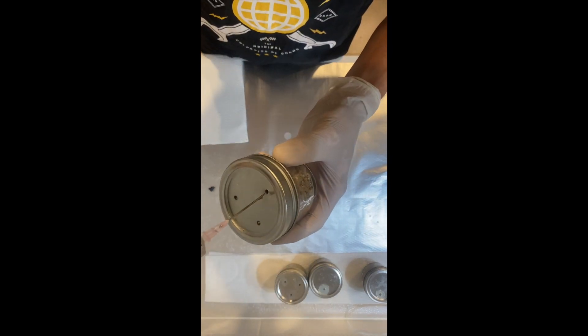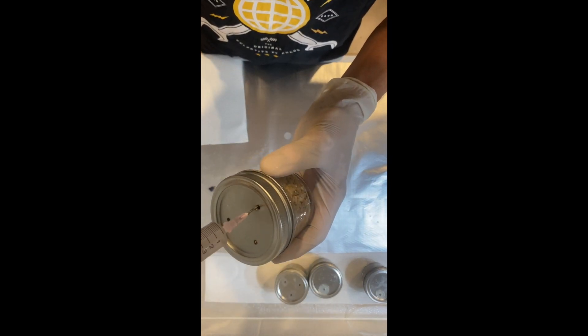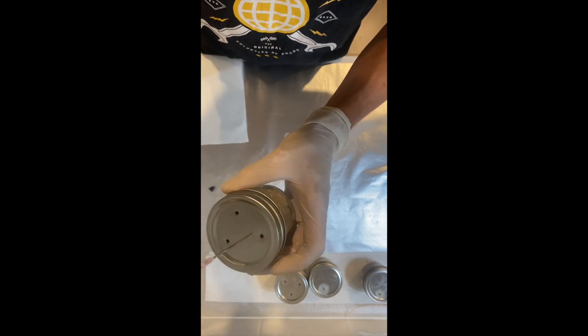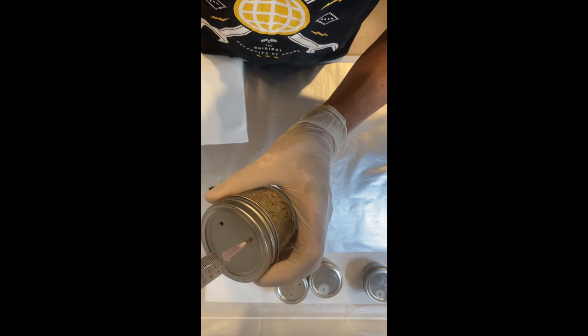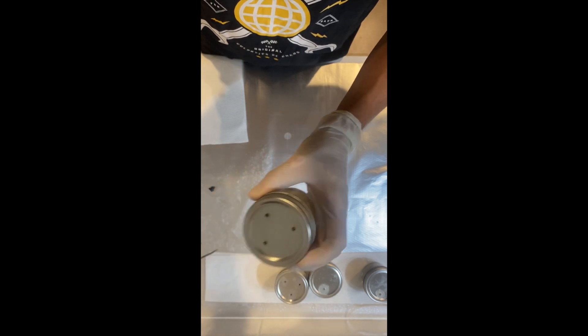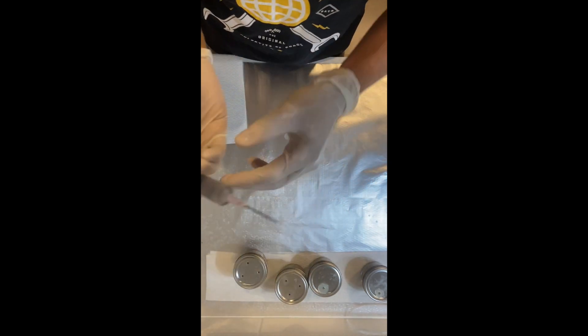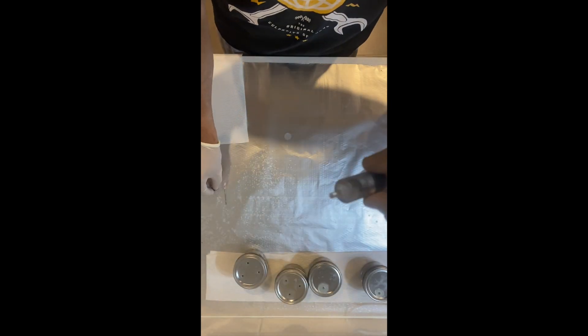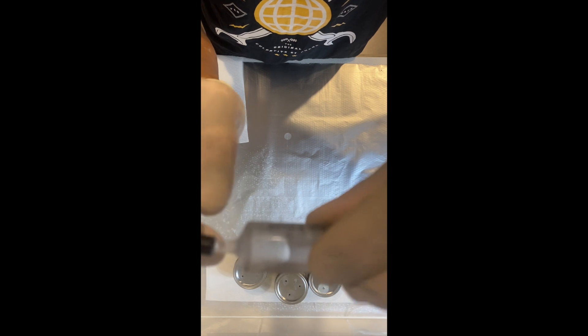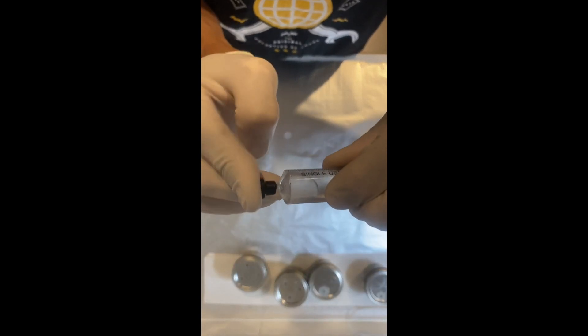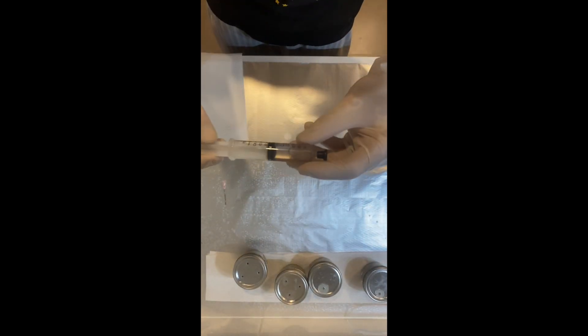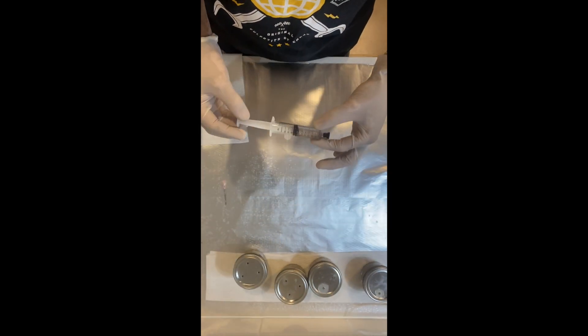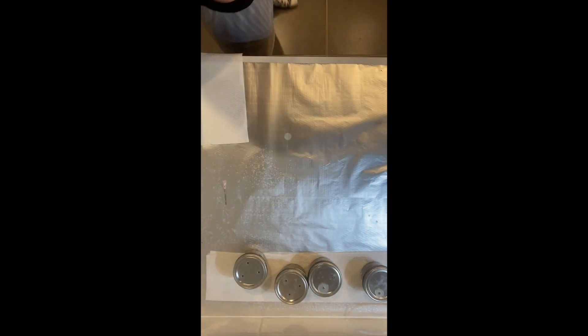Alright, last one now guys. One, two, three. Now what we can actually do is pop the needle off that, put our rubber stopper back on, and that can go back in some foil and you can use that for your next few jars. I'm just going to put that off to the side.